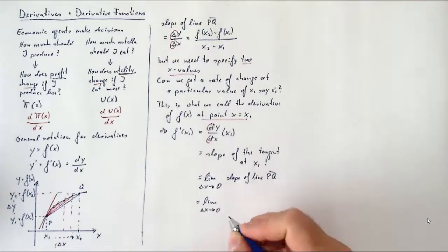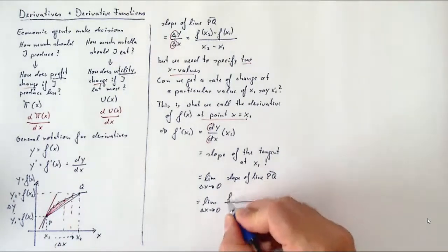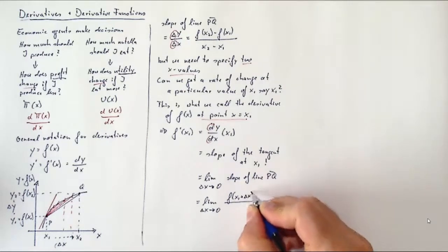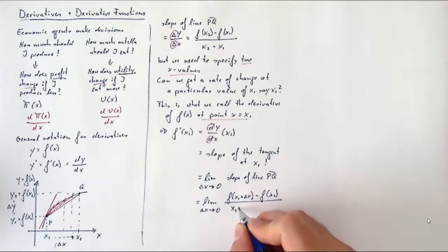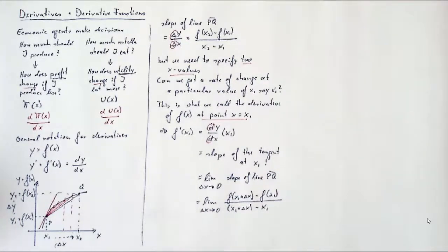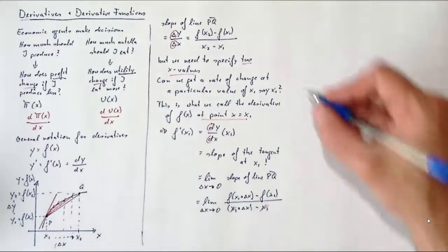So what we can do is, in our expression above for the slope of the secant, we can replace x₂ with x₁ + Δx, and then we'll just replicate our formula for the slope: [f(x₁ + Δx) - f(x₁)] / (x₁ + Δx - x₁). Now we can see in the denominator the x₁ cancels out, and we are left with the definition of our derivative: the limit of Δx going to zero of [f(x₁ + Δx) - f(x₁)] / Δx.